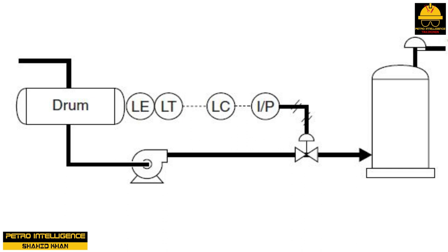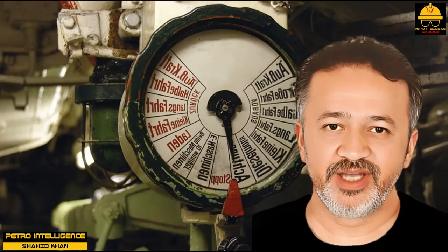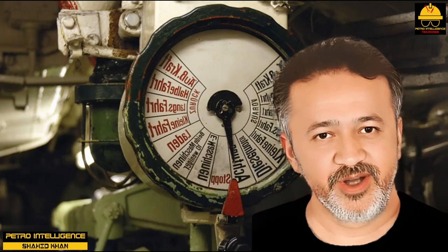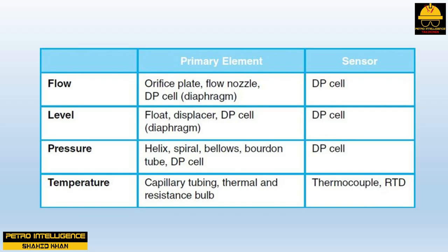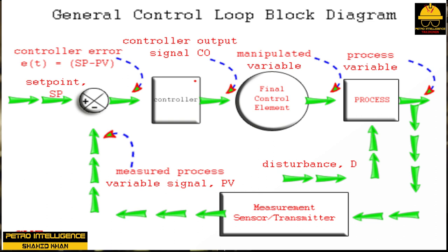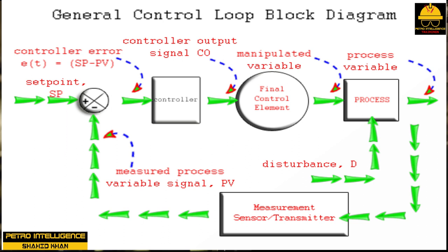The key component of automatic control is the control loop — the group of instruments that work together to control a process. These instruments typically include a transmitter coupled with a sensing device or primary element, a controller, a transducer, and a control valve. The basic elements of a control loop are: (1) measurement device — primary elements and sensors; (2) transmitter — a device designed to convert a measurement into a signal; (3) controller — a device designed to compare a signal with a set point and transmit a signal to a final control element; (4) transducer — a device that converts an air signal to electric or pneumatic signal, sometimes called an I/P or converter.